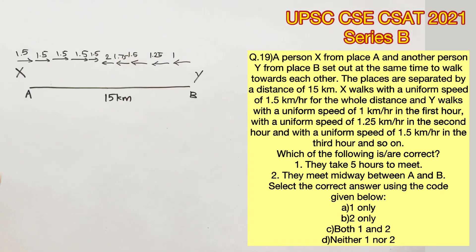The first statement says they take 5 hours to meet. If you see, we have already entered 5 values on each side. So for 5 hours, we have already entered the distance that has been covered by both X and Y.